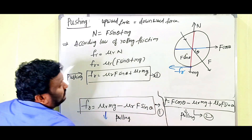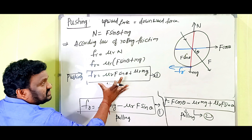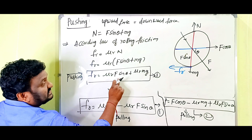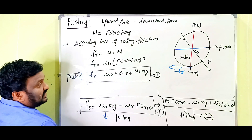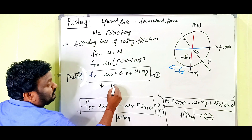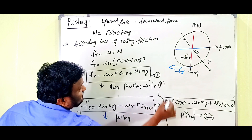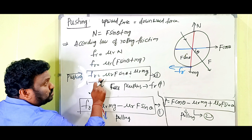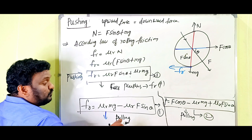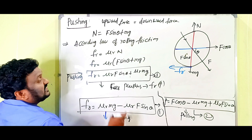Comparing equation 1 (pulling) and equation 3 (pushing): in pushing, F_R equals mu_R·F sin theta plus mu_R·Mg (plus sign), whereas in pulling, F_R equals mu_R·Mg minus mu_R·F sin theta (minus sign). Because of the plus sign in pushing, the friction force is more when pushing. Therefore, we have to apply more force when pushing, which is why pulling is preferred over pushing.